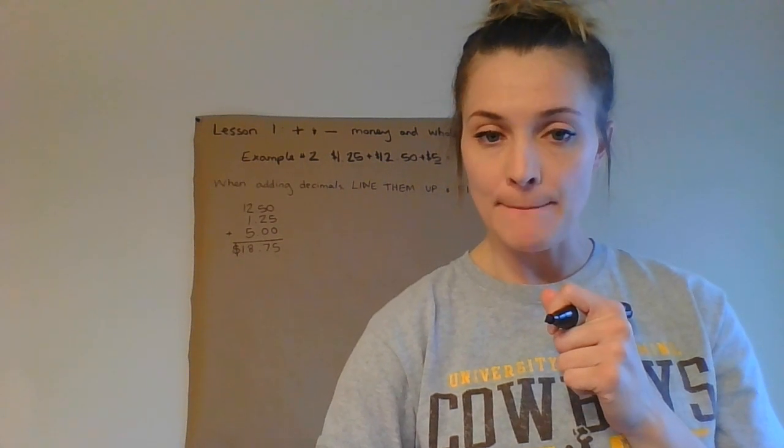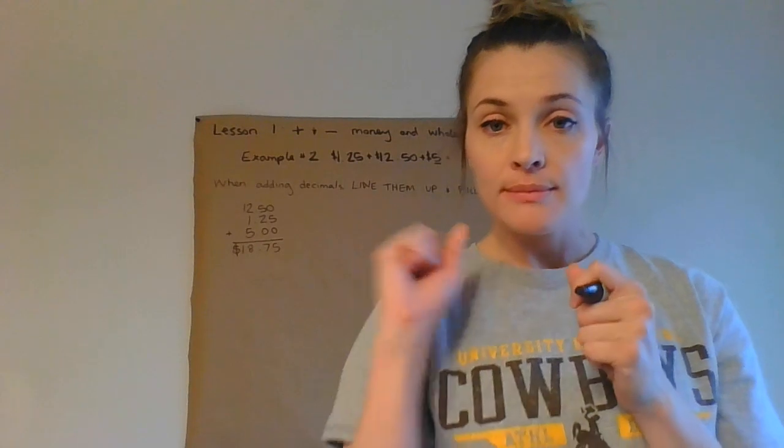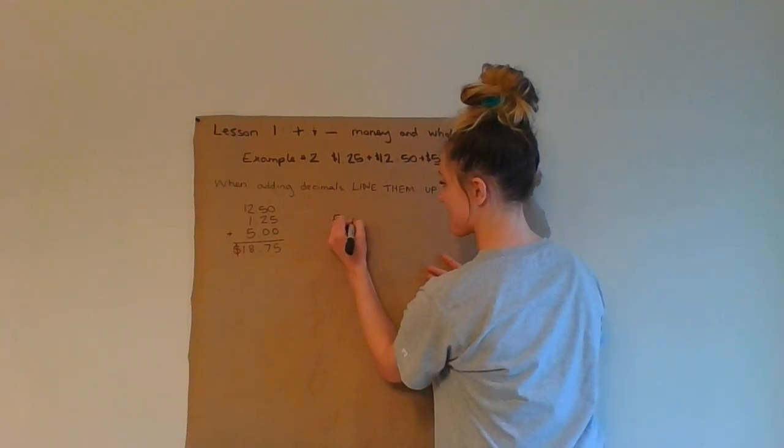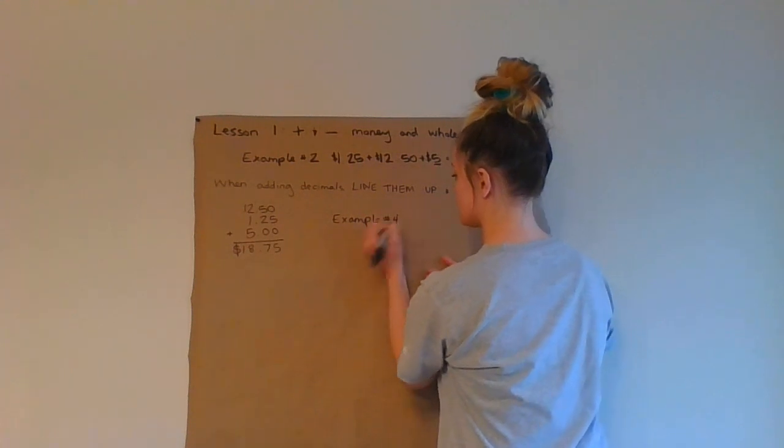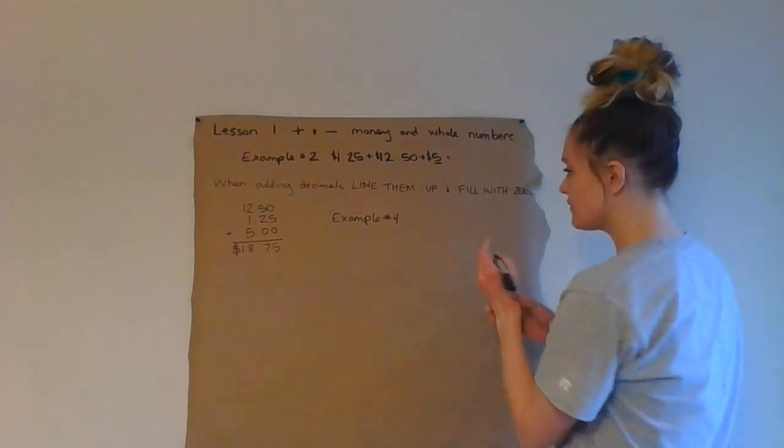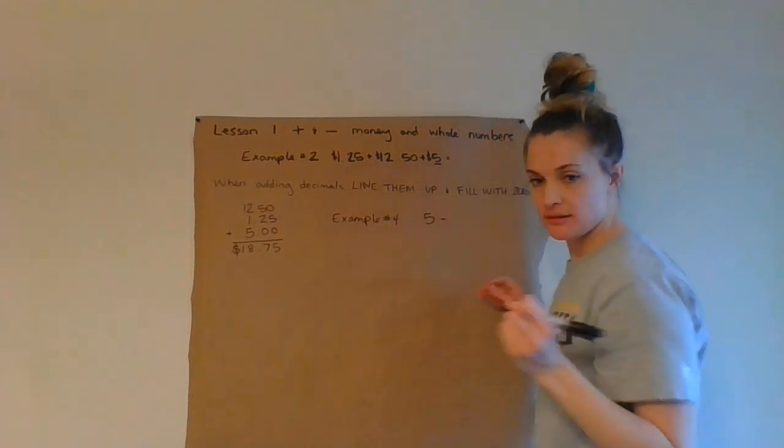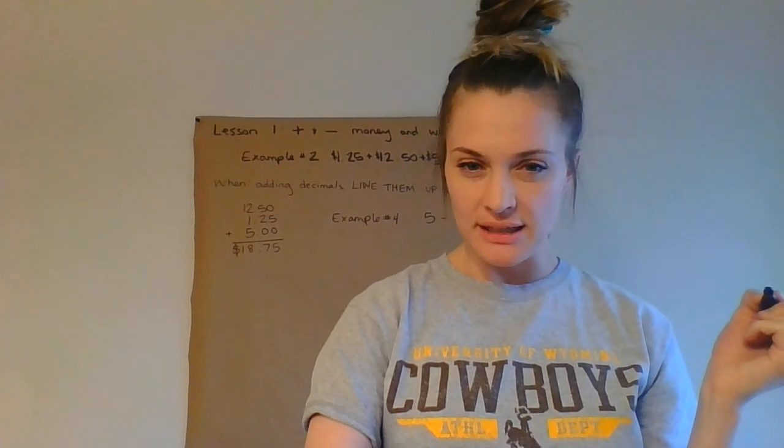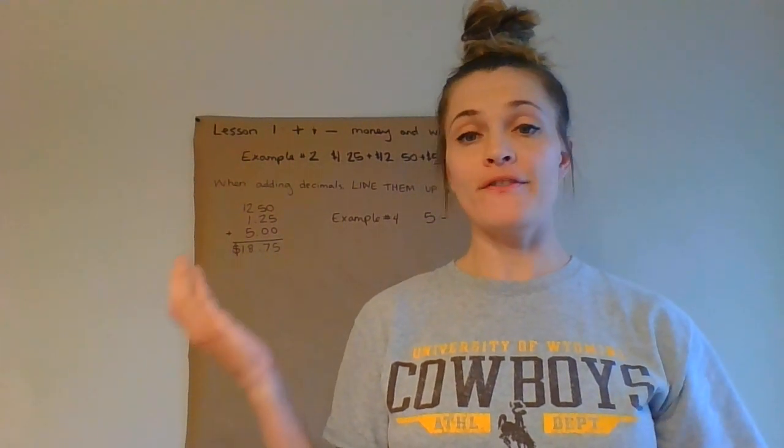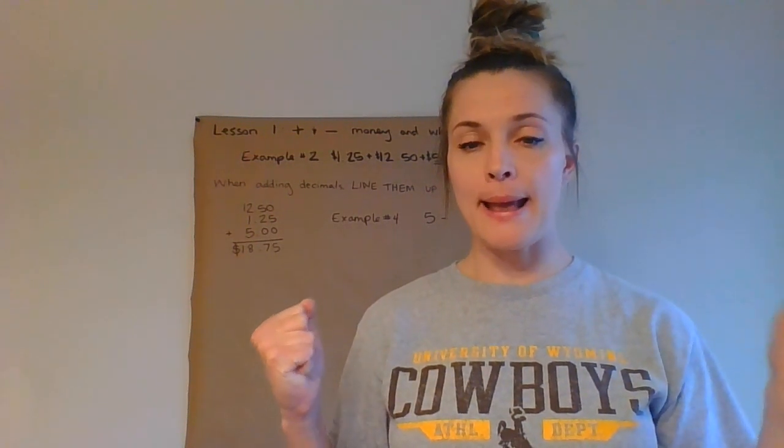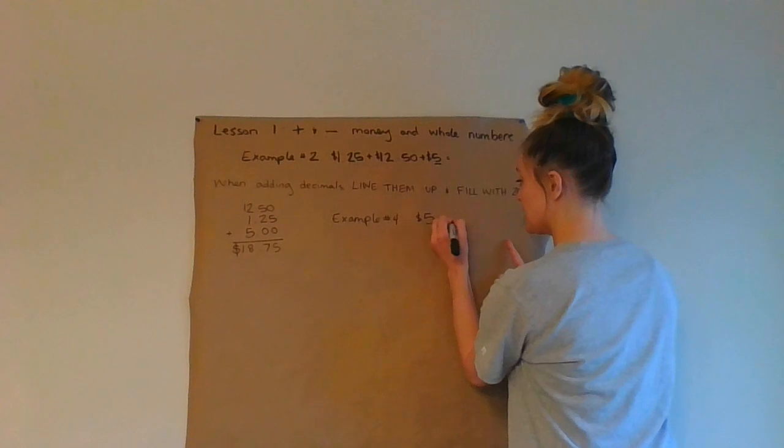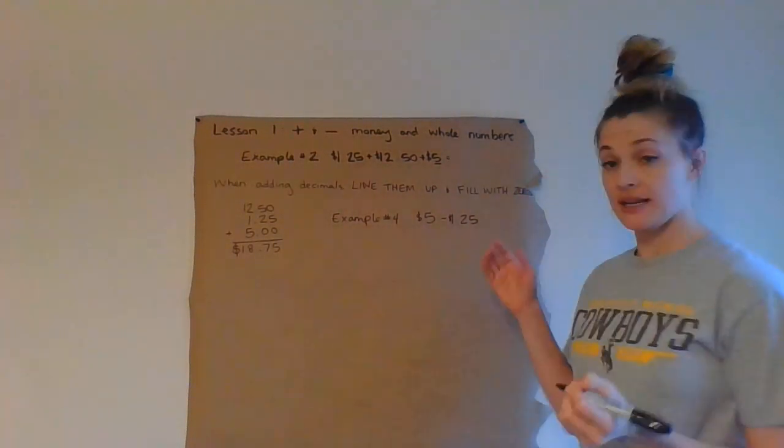Now I'm going to do example number four. Make sure you're following along. It says Jim spent $1.25 on a hamburger. He paid with a $5.00 bill. Find how much change he should get back by subtracting $1.25 from $5.00. So I've got $5.00 minus $1.25 because that's, it tells me to set it up like that.